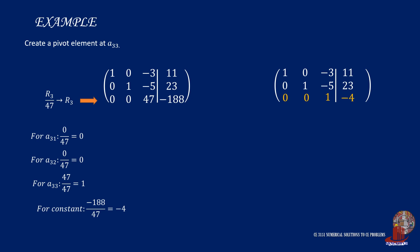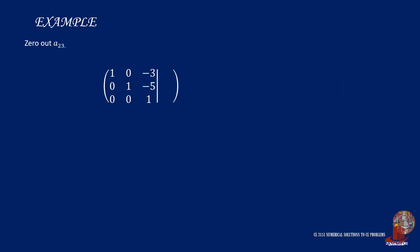Now that we have identified the pivot element for the last column, we can zero out the other elements in that column. Moving up to zero out the element above the last pivot row, we use the formula row 2 plus 5 times row 3 for the updated row 2. With element 2,1, we have 0 plus 5 times 0, and still we have 0. At element 2,2, we have 1 plus 5 times 0 to keep 1. Then, at element 2,3, we have negative 5 plus 5 times 1 to get 0. And also, for the constant, we have 23 where we add 5 times negative 4 to give 3.